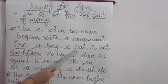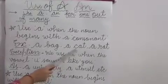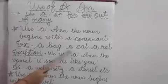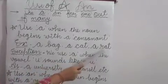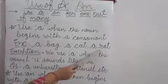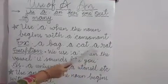Cat - the first letter is C, and C is a consonant. That's why we use 'a' here. A rat - R is a consonant, that's why we use 'a' here.